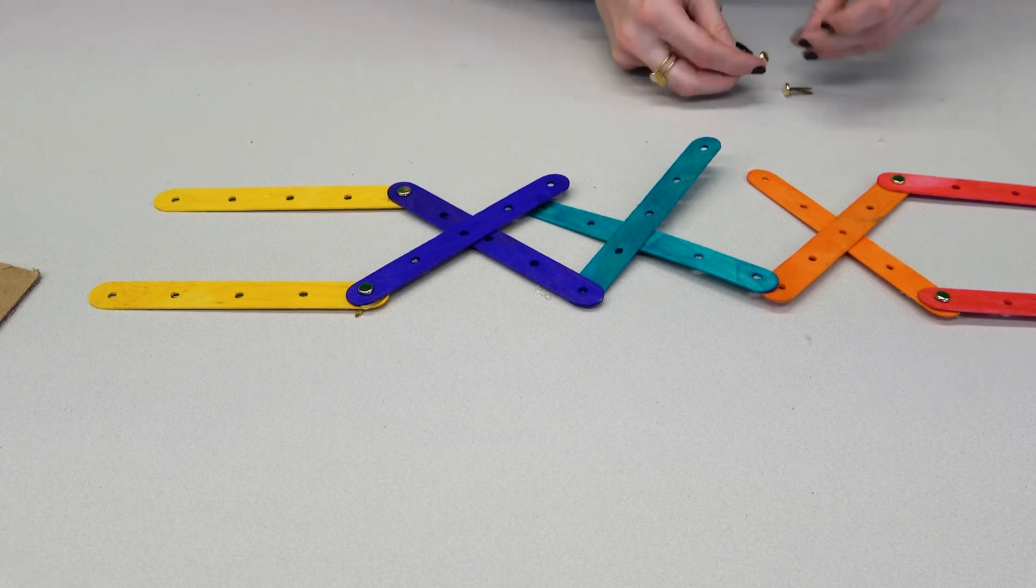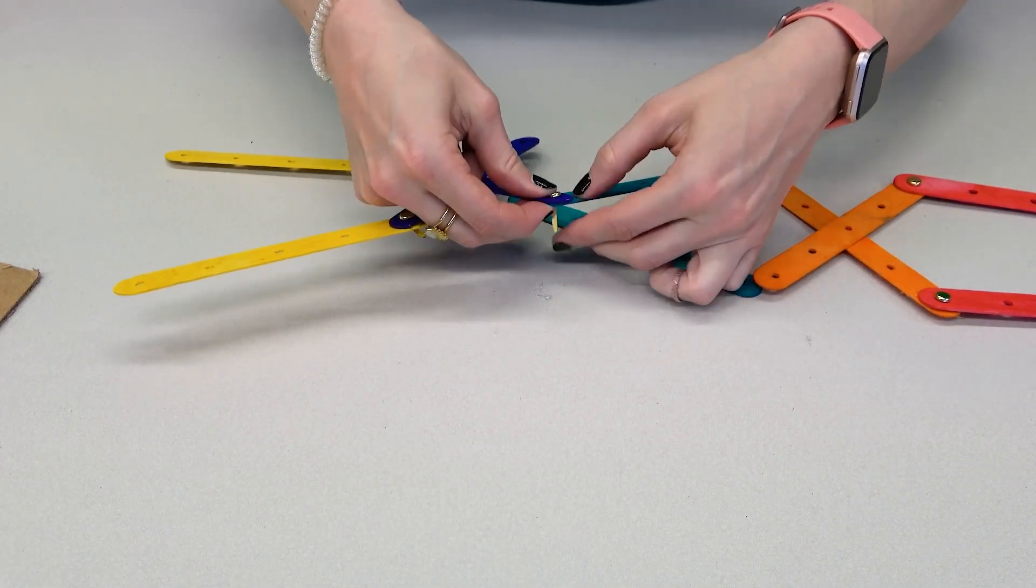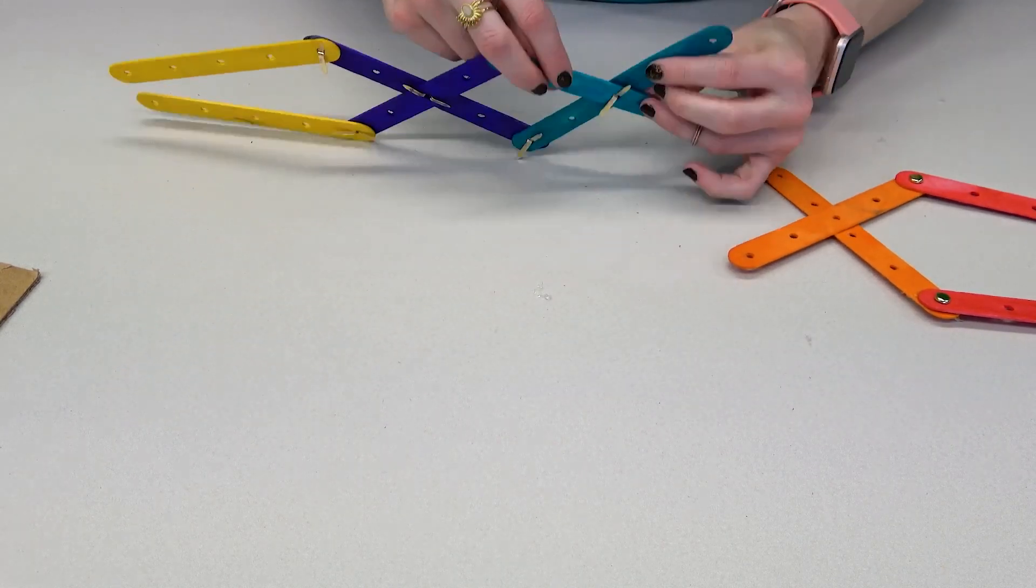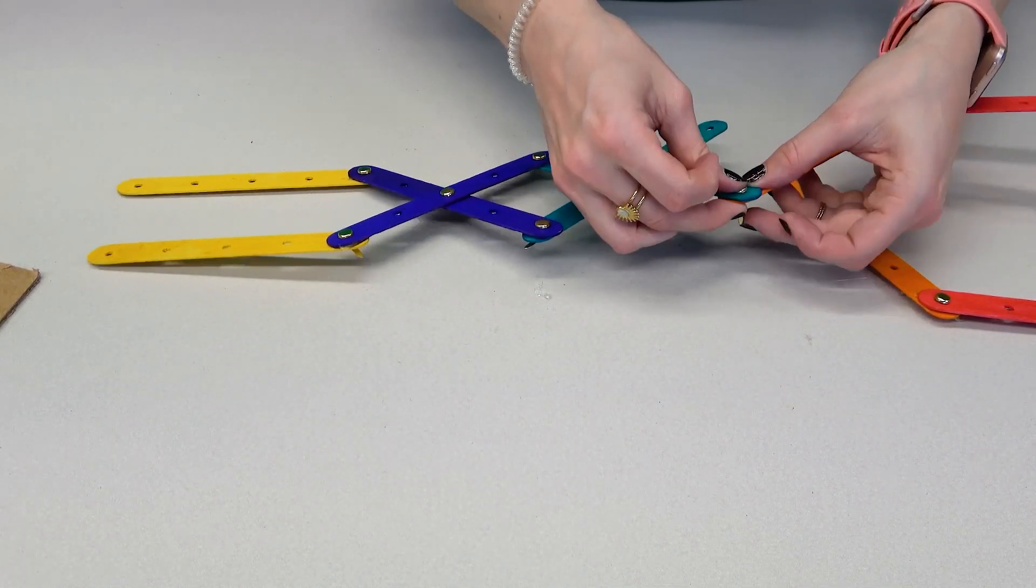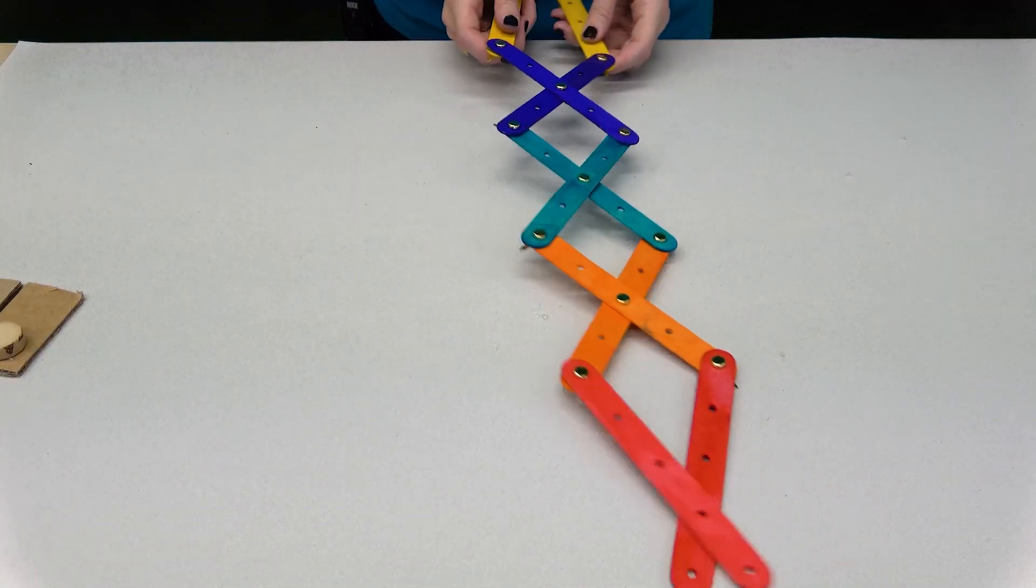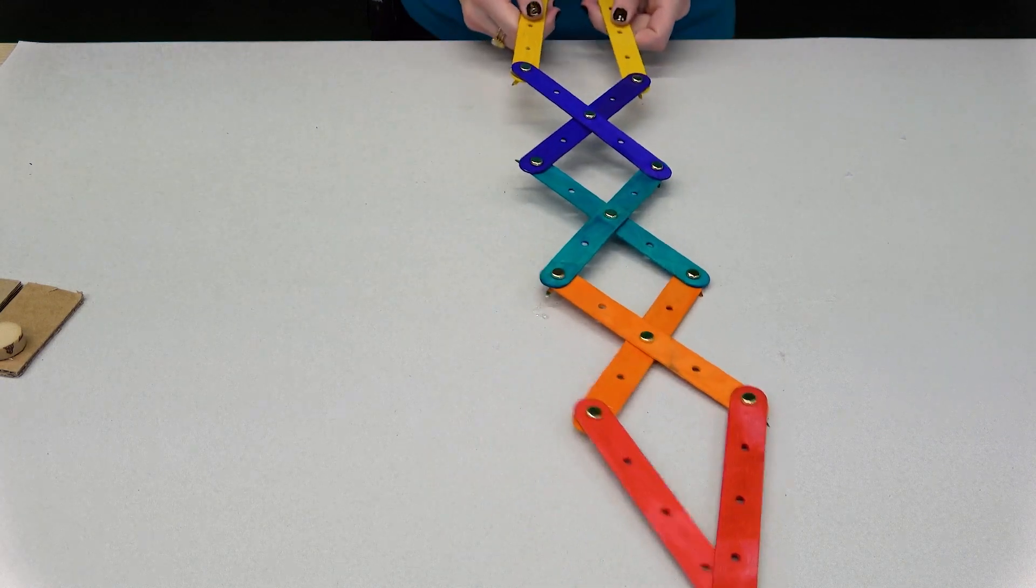Now pin it! This already looks like a robotic arm. Now let's add the final touches and enable it to grab things.